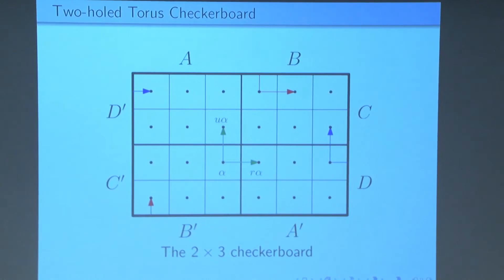So in this manner, we can create a two-hole torus checkerboard. We start with our checkerboard, cut it into quadrants, and then whenever a checker falls off edge a, it returns to a prime. Whenever it falls off edge b, it returns to b prime, and so forth. And here are some example edges. And now we call this a two by three checkerboard, even though it has four rows and six columns, because the size of each quadrant is two by three. And that's in some sense the unit size of the checkerboard.